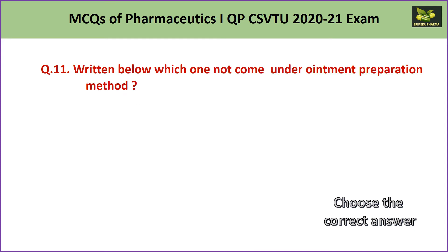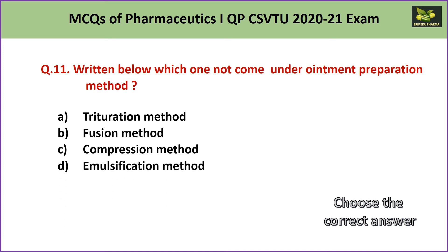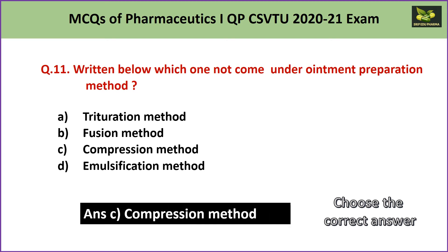Question number 11: Which one does not come under ointment preparation methods? A. trituration method, B. fusion method, C. compression method, or D. emulsification method. The odd one out is the compression method, because compression is used especially in tablet manufacturing. All the other three methods — trituration, fusion, and emulsification — are used for preparing ointments. Hence the answer is C — compression method.